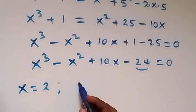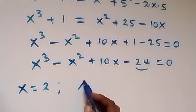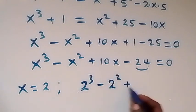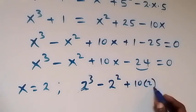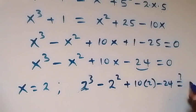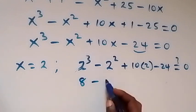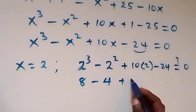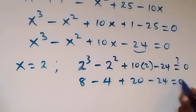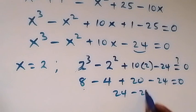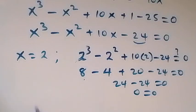Substituting x equals to 2: 2 raised to power 3, which is 8, minus 2 squared which is 4, plus 10 times 2 which is 20, minus 24 equals to 0. Then 8 minus 4 is 4, plus 20 is 24, minus 24 equals 0, which confirms that x equals to 2 is a root.